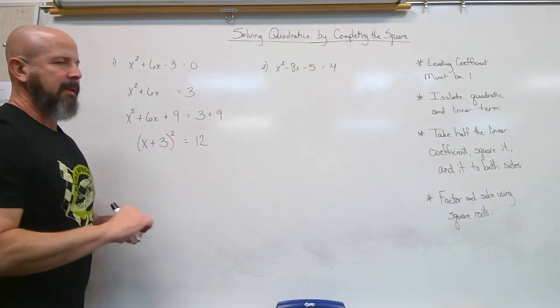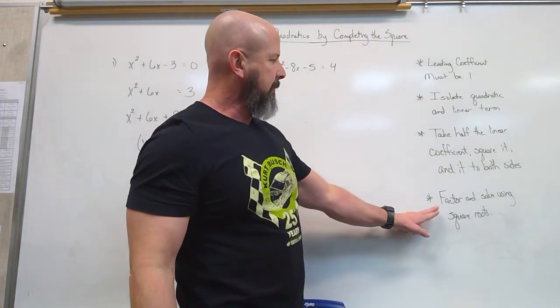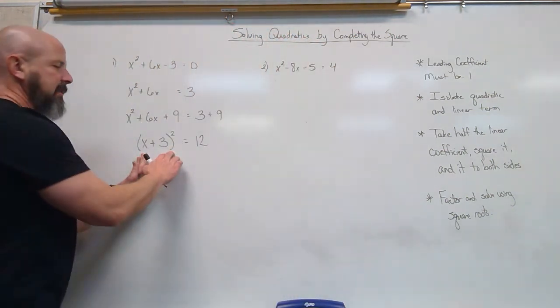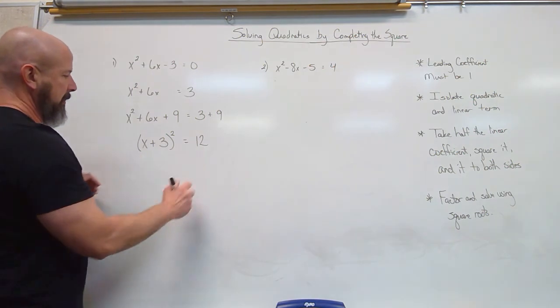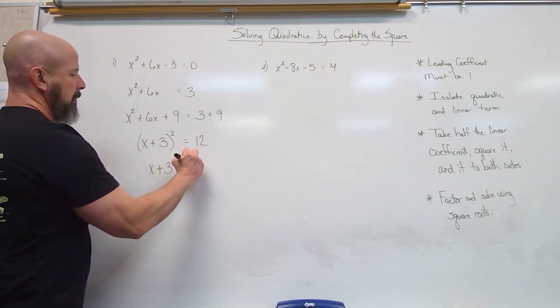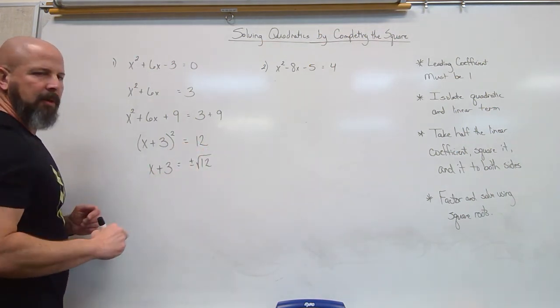Now it looks like what we did before. So the last step I said factor, which we did. Solve using square roots. My quadratic is isolated. Here comes that square root method back again. x plus 3 will be plus or minus the square root of 12 if I square root both sides.